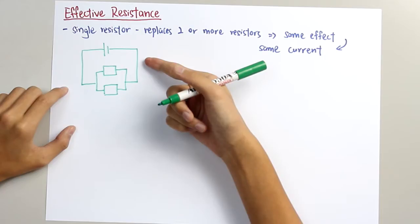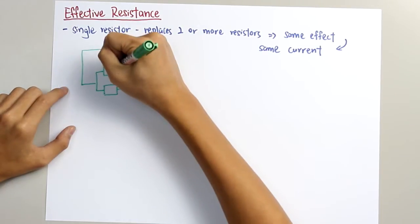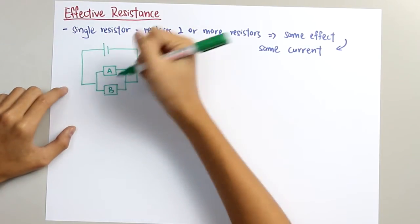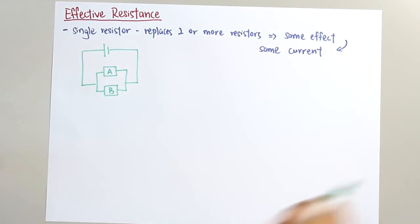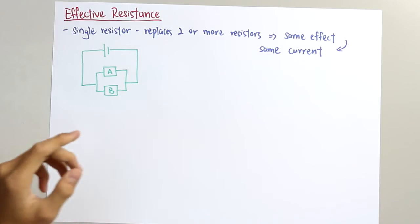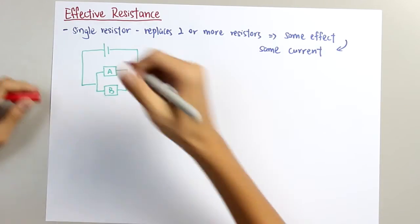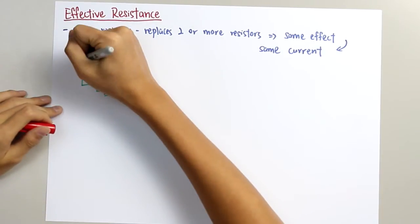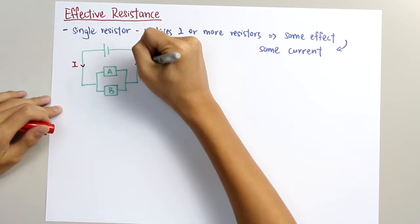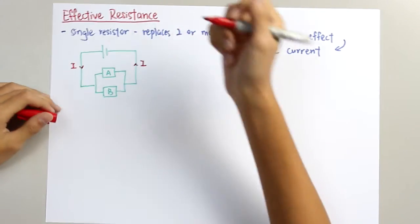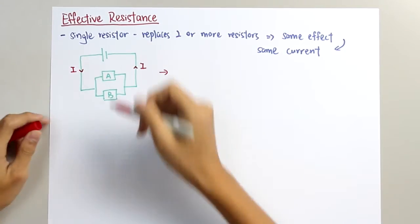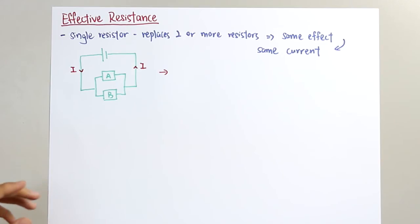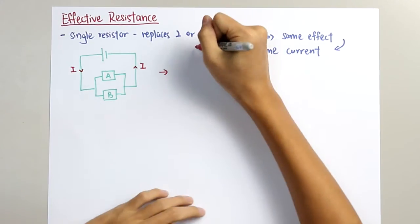This is initially a parallel circuit, and I label the two resistors here as A and B. We assume current I passes through these two resistors. So when we combine these two resistors, we should get something like this.